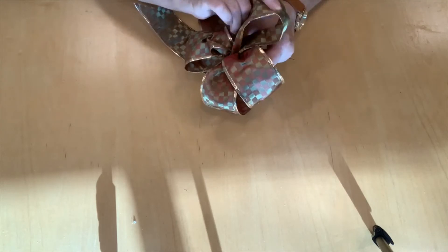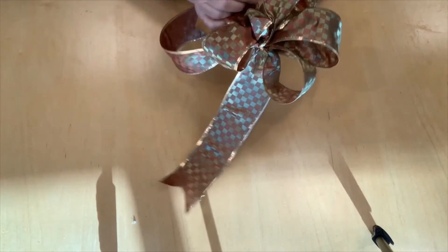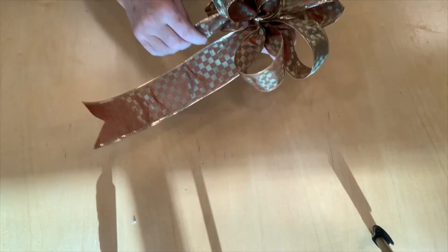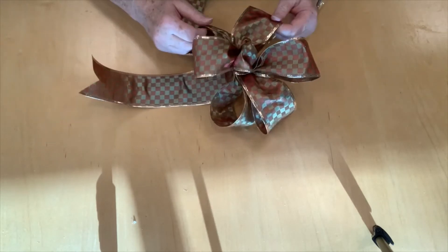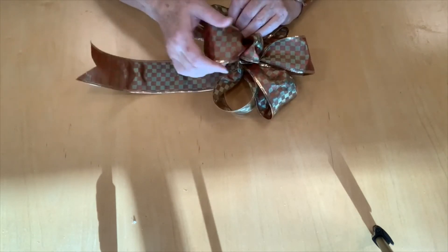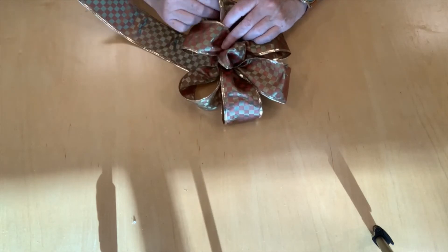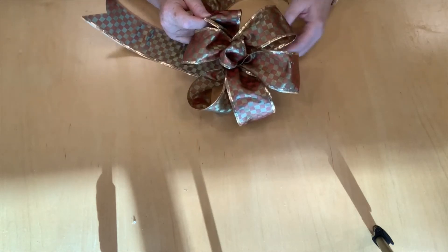Wire ribbon is pretty forgiving of any mistakes. It'll allow you to pull your bow so that your loops are going where you want them to go and your bow looks the way you want it to look.